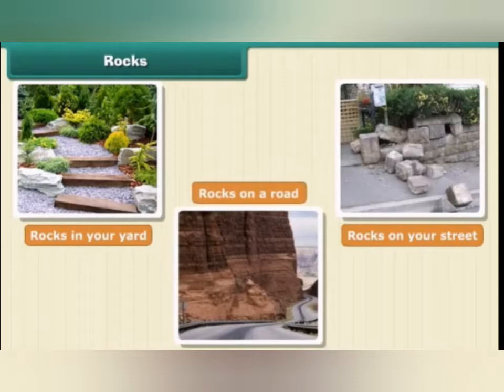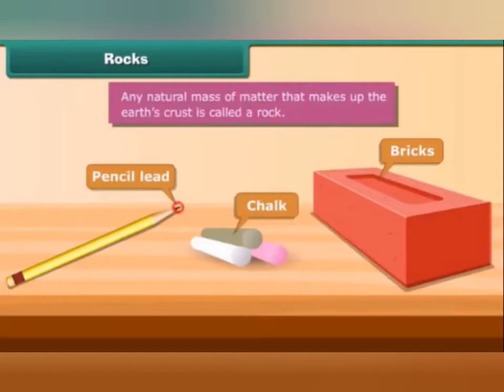Children, we can find rocks everywhere around us. We can see rocks in our garden, on the roads, and on the streets. So rocks are present everywhere. Even pencil lead, chalk, and bricks — all these are made up of rocks. Any natural mass of material that makes up the earth's crust is called a rock.